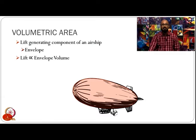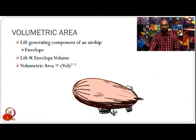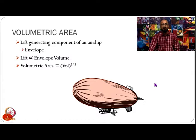Volume is not exactly an area, so how do we get a reference area from envelope volume? We take this trick: we define the volumetric reference area, which is the envelope volume raised to the power 2/3. Volume has dimensions of meter cubed, whereas volume to the power 2/3 has dimensions of area, that is meter squared. This makes total sense because it is the envelope volume that generates the lift in the case of airships.